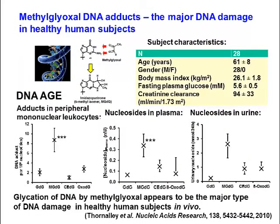DNA also suffers methylglyoxal damage. The major DNA damage is imidazopurinone in healthy people, and 1 in 10^5 nucleotides suffers methylglyoxal damage. Damaged nucleotides are found in leukocytes, and corresponding nucleosides are found in plasma and urine. Glycation of DNA by methylglyoxal appears to be the major type of DNA damage in healthy human subjects in vivo.